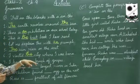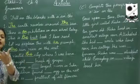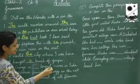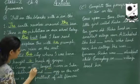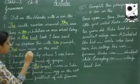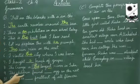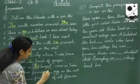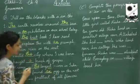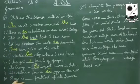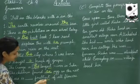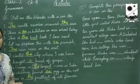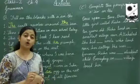Number seven: 'I bought dash bunch of grapes.' — 'I bought a bunch of grapes.' Number eight: 'The Ganga is the longest river in India.' — The Ganga is a superlative form. Number nine: 'The children found dash egg in the nest.' Egg starts with a vowel, so 'an egg'. Number ten: 'Rose is the prettiest flower of all flowers.' — Prettiest is a superlative degree, so we use 'the'.